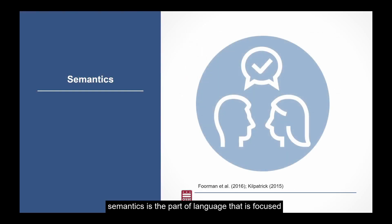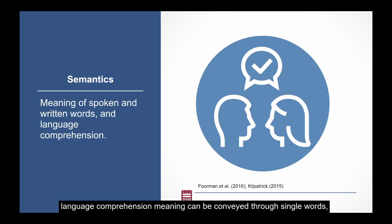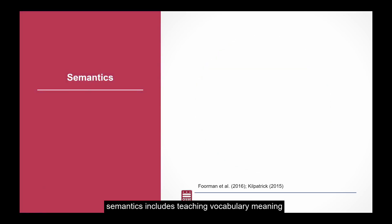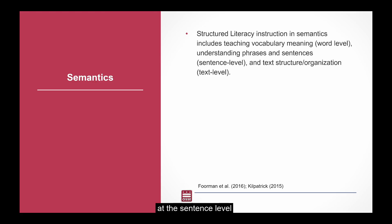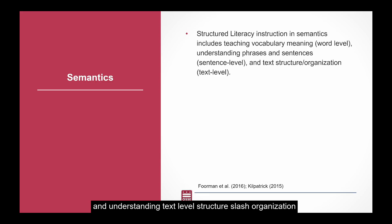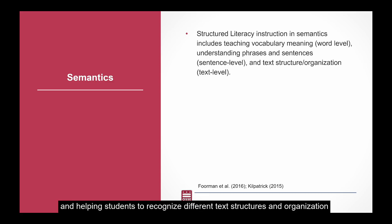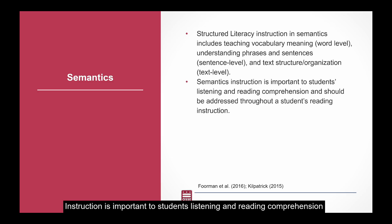Semantics is the part of language focused on meaning. Semantics refers to the meaning of spoken and written words and is related to a student's language comprehension. Meaning can be conveyed through single words, word combinations, and complete sentences. Structured literacy instruction in semantics includes teaching vocabulary meaning at the word level, understanding phrases and sentences at the sentence level, and understanding text-level structure and organization. Comprehension of both oral and written language is developed by teaching vocabulary words, supporting students to understand phrases and sentences, and helping students recognize different text structures and organization. Semantics instruction is important to students' listening and reading comprehension and should be addressed throughout a student's reading instruction.